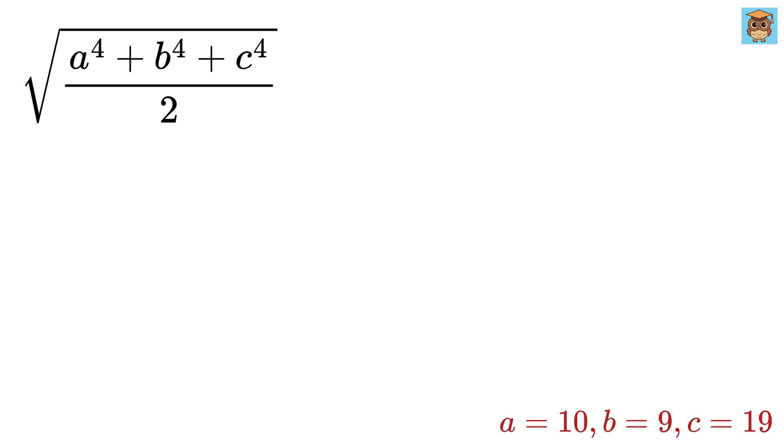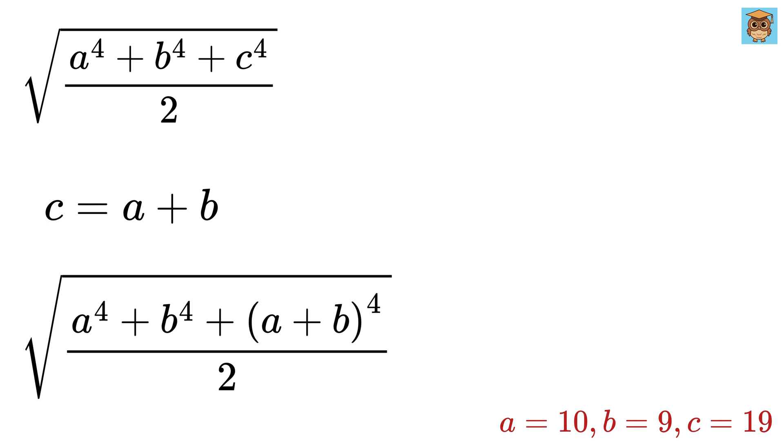Now this is where we will use our tiny brain. We substitute C as A plus B, because we are given that C is 19, which is equal to 10 plus 9, or the sum of A and B. Since we have C to the 4, we replace it with A plus B whole to the 4.